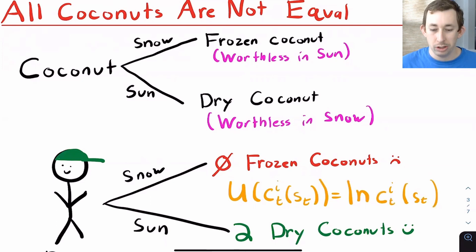So for example, I'm going to call a coconut that fell from Dave's tree when it was snowy, I'm going to call that a frozen coconut. It's called a frozen coconut because that is worthless if it's sunny outside. If I buy a frozen coconut and the weather turns out to be sunny, then that frozen coconut thaws and gets all nasty and I don't really want to eat it. I just throw it away.